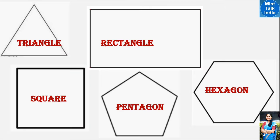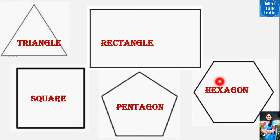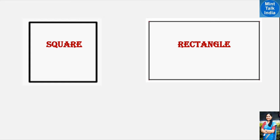Before we start our chapter, let us first revise some two-dimensional shapes which we have already studied — such as triangle, rectangle, square, pentagon, hexagon, etc. In this chapter we will basically study square and rectangle a little more.